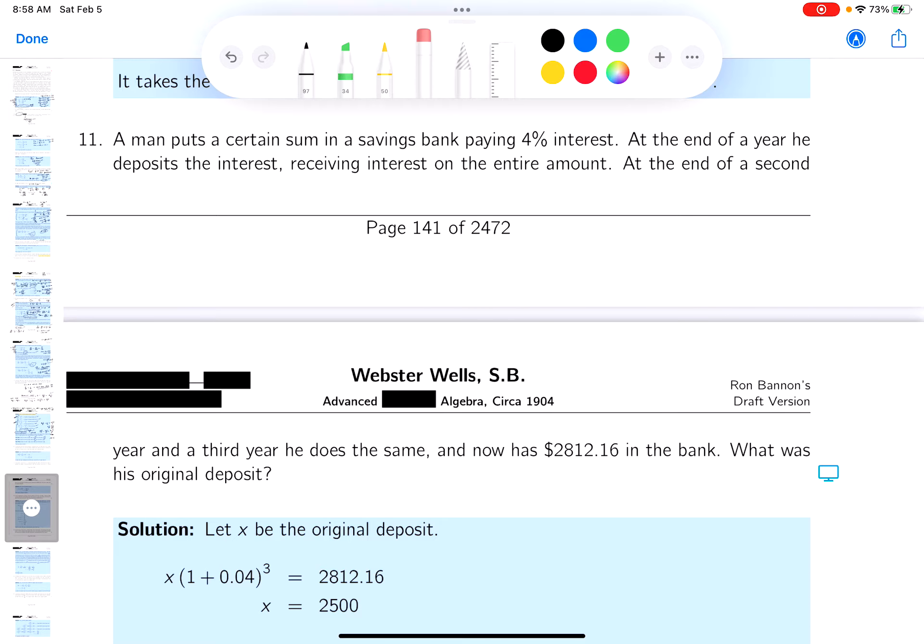He deposits the interest. In other words, they give him the interest, puts it right back in the bank. And in the second year, he does the same thing. Third year, he does the same thing. So what's their question? Their question is, what's the original deposit?